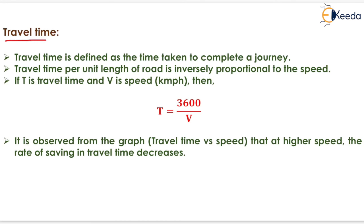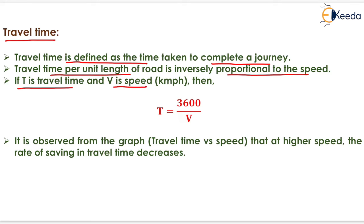The next topic is travel time. Travel time is defined as the time taken to complete a journey. Travel time per unit length of road is inversely proportional to speed. If T is the travel time and V is the speed in kilometers per hour, then T equals 3600 upon V. It is observed from the graph that at higher speed, the rate of saving in travel time decreases.